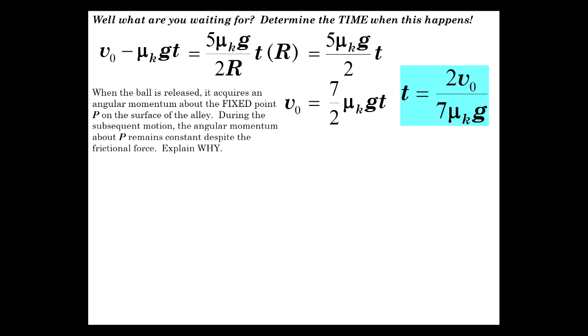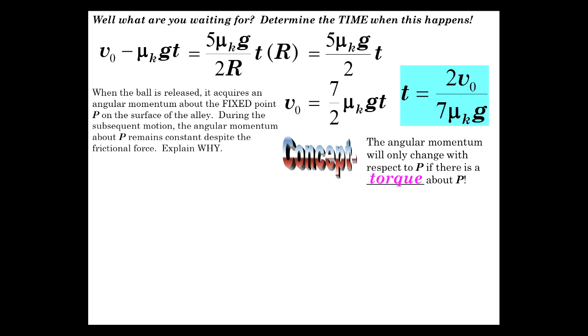Throughout the entire interval, the angular momentum of the bowling ball with respect to point P remains constant. Try and explain. If the angular momentum with respect to point P is going to change, what must there be about point P for that to be? Are you done yet? Well, actually, it's a good question. The angular momentum will only change with respect to P if there's... What about P? That's right. Torque.